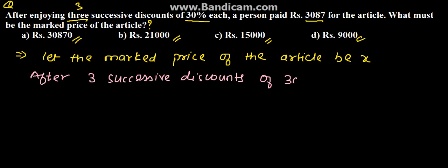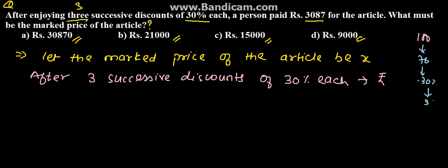After three successive discounts of 30% each, suppose the price is 100 rupees. After the first discount of 30%, it becomes 70 rupees. Then again 30% is reduced, and again 30% is reduced. So after three successive discounts it becomes 70 × 70 × 70 — which works out to 34.3. So 34.3 is the price after three successive discounts.